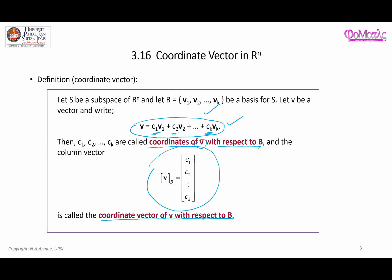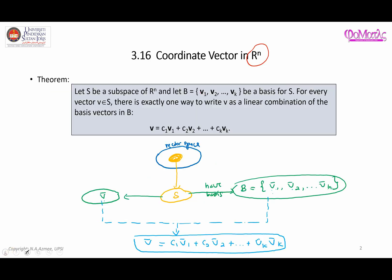Following that idea, the scalars c1, c2, ck written in column form as [c1, c2, ck] constitute the coordinate vector of v with respect to basis B. So the coordinate vector of v has something to do with this basis B, and that's the whole idea of the coordinate vector.